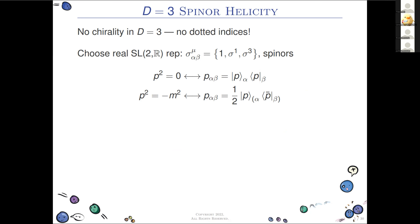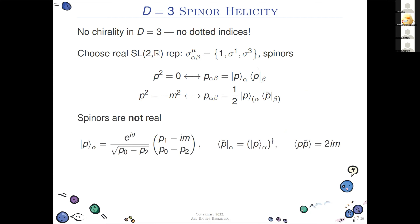If p-squared is zero, we have the outer product of two identical spinors. If the momentum is massive and p-squared is non-zero, we have a spinor and its barred cousin. In the massless case in the SL(2,R) representation they are real, but in the massive case they're not real — not real exactly because the mass has an i in front of it and the sign of the mass differs between different spinors.